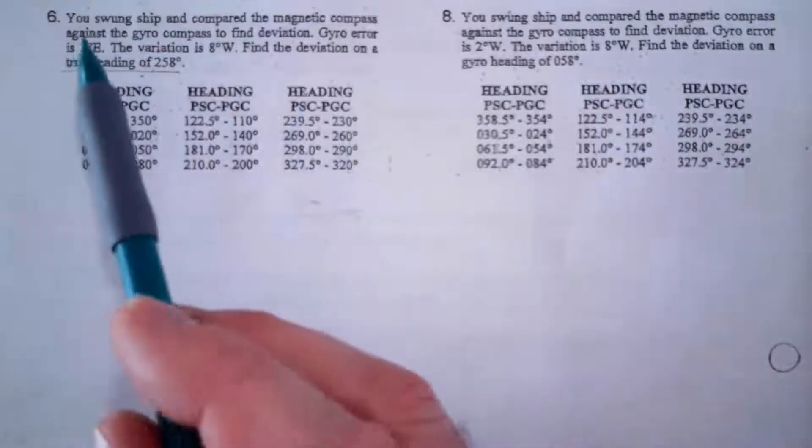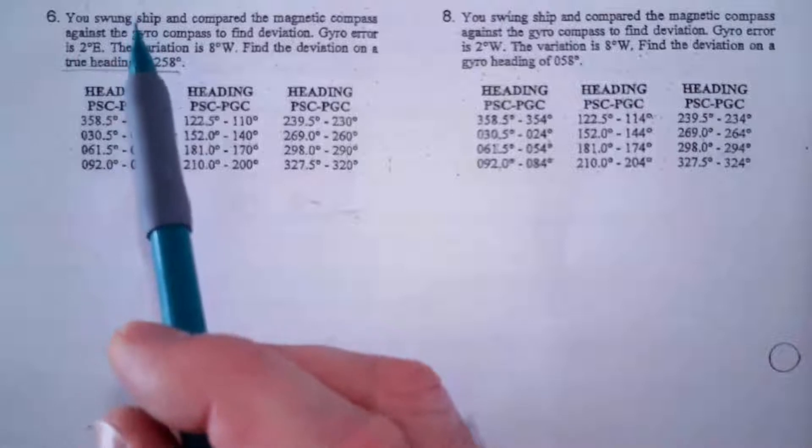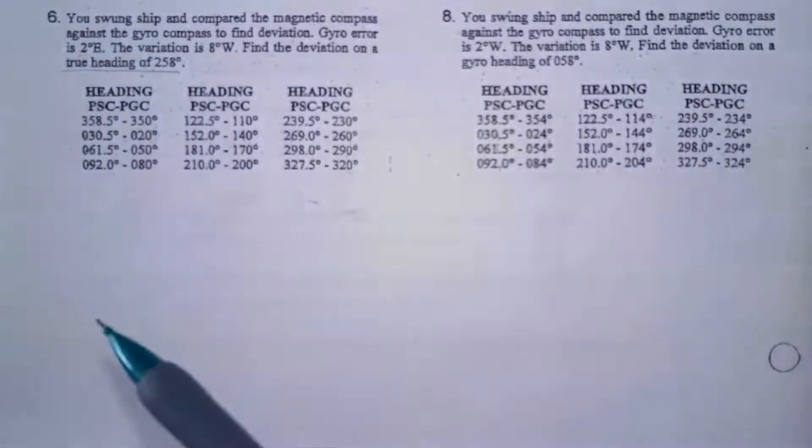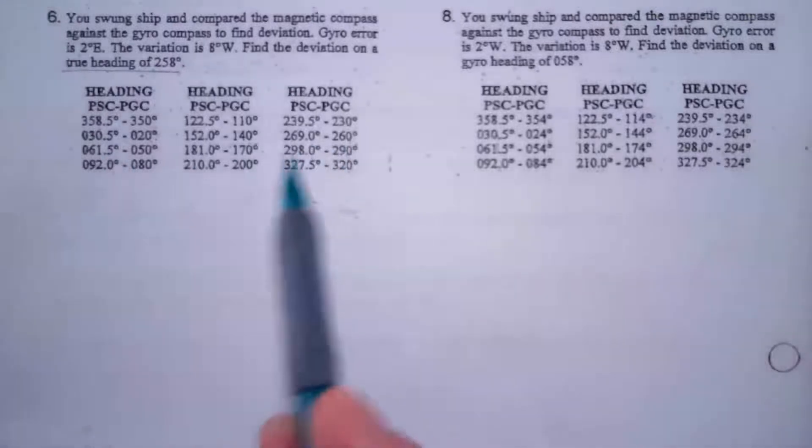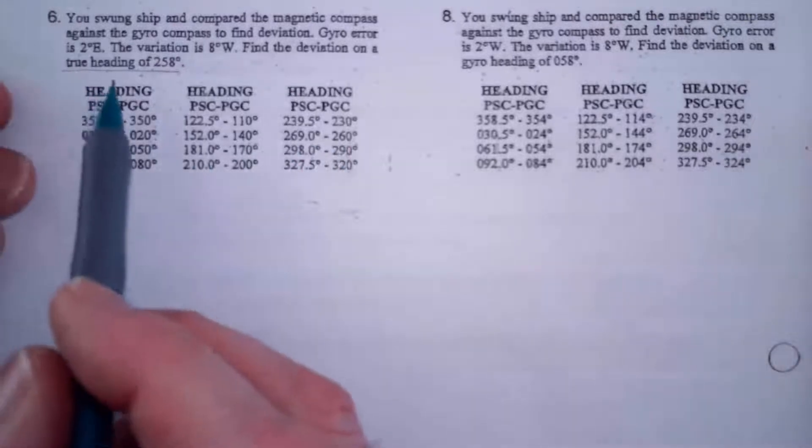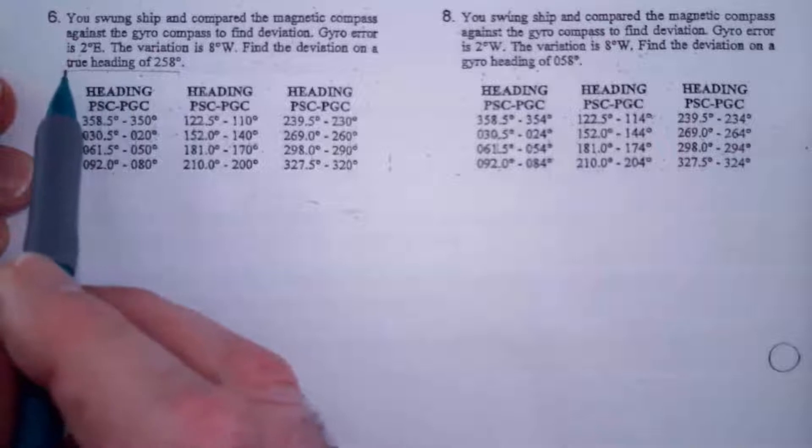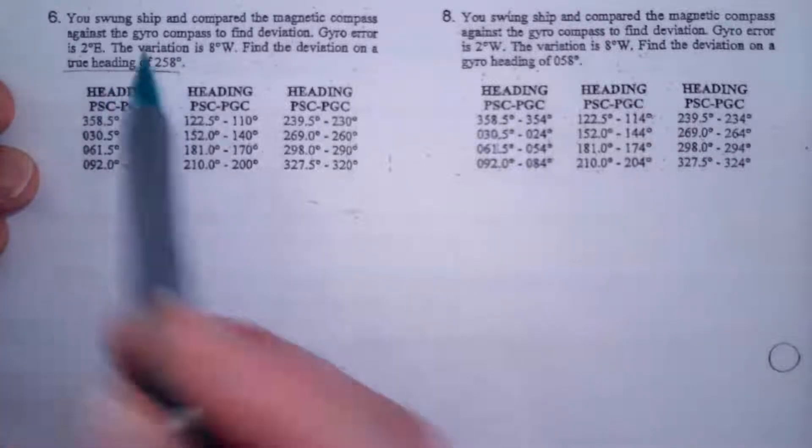In this video we're going to do problem six of the calculate deviation based on data from swinging the ship. This one is probably the scariest of the problems you'll get on the Coast Guard exam. This one is given a true heading.